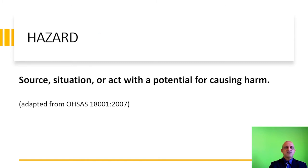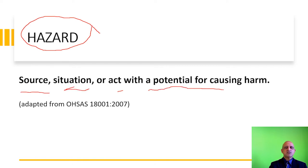We now move on to the definition of hazard. A hazard is a source, situation, or act with a potential for causing harm. A very common example is your vehicle itself. You are in your vehicle — your car or truck — and you are parked in your garage. The truck itself is not a hazard, but when you begin to move this truck across the parking lot into the main street and onto the highway, the hazard is manifest due to a process.